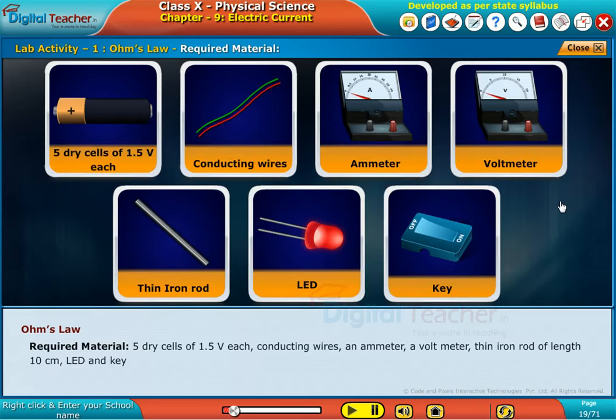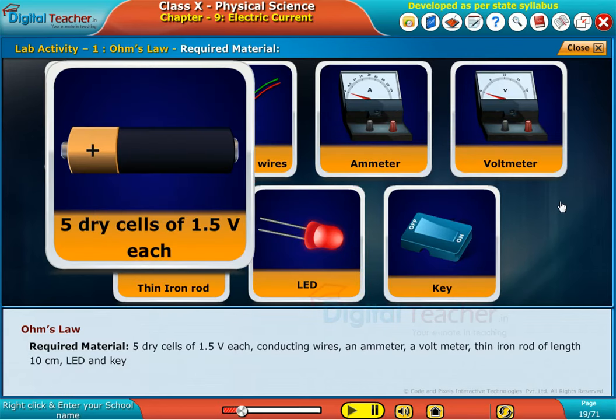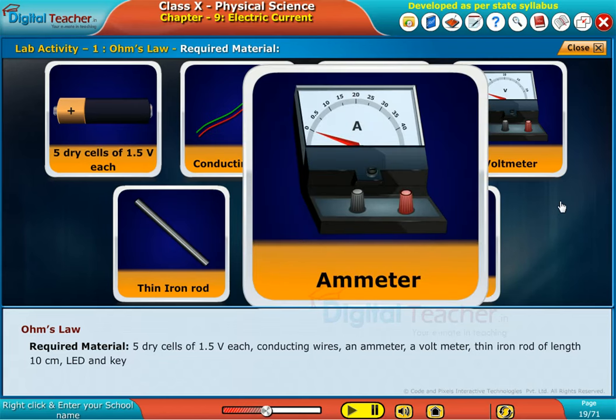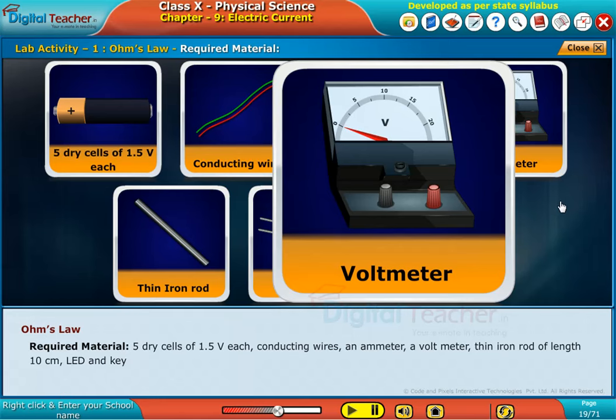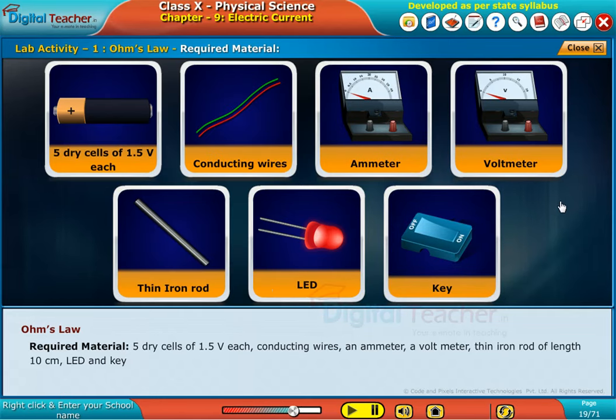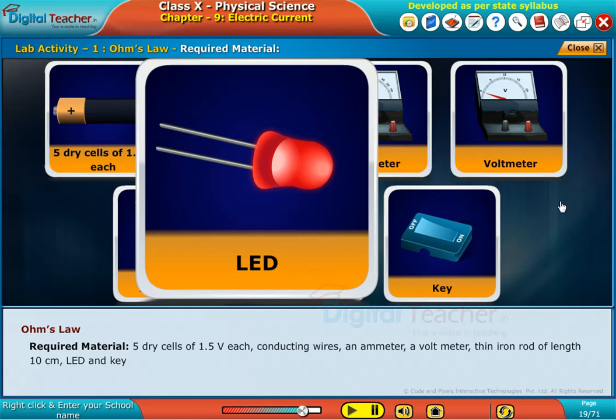Required materials are 5 dry cells of 1.5 volts each, conducting wires, an ammeter, a voltmeter, thin iron rod of length 10 centimeters, LED and key.